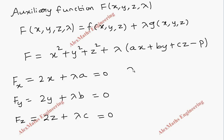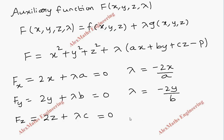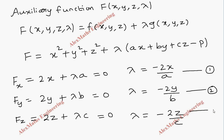As per the working procedures and conditions, we have to equate this to zero. Then from the first part, lambda equals minus 2x by a. From the second part, lambda is minus 2y by b, and from the third part, lambda is minus 2z by c. Let's take these as equations 1, 2, and 3.